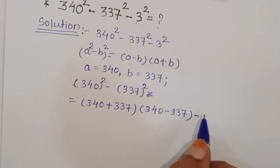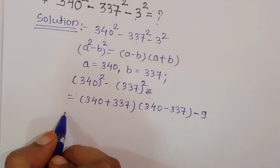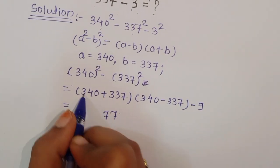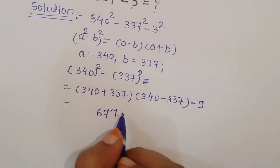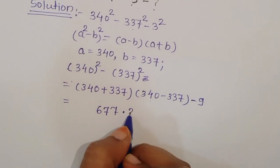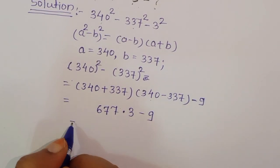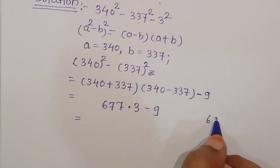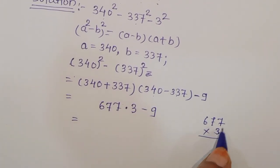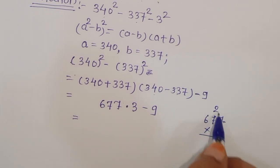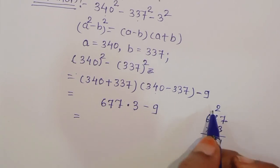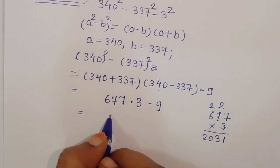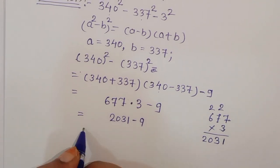And here minus 3 square, that is minus 9. So it equals 677 times (340 minus 337), that is 3, minus 9. Now 677 times 3 equals 2031, and 2031 minus 9 equals 2022.